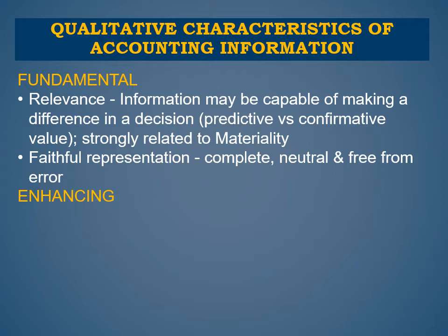The second fundamental qualitative characteristic is faithful representation, whereby all the information should be complete — none of the items missing — and neutral, and also free from error. Neutral means that you do not have any biasness; the information does not influence a certain person or group of people, and of course the information should be free from any error.